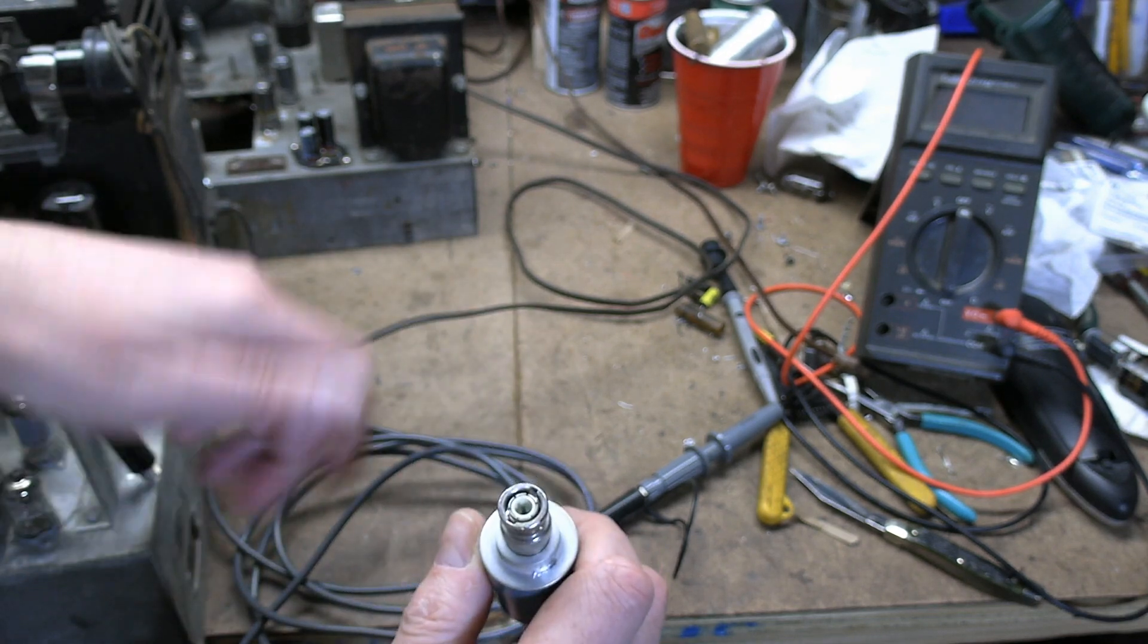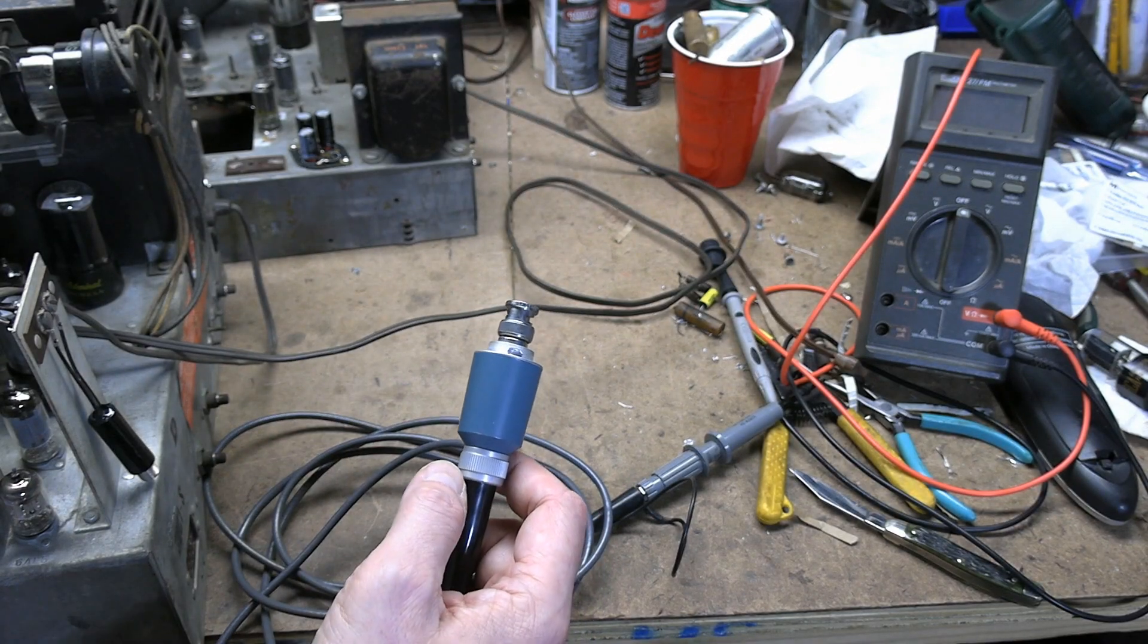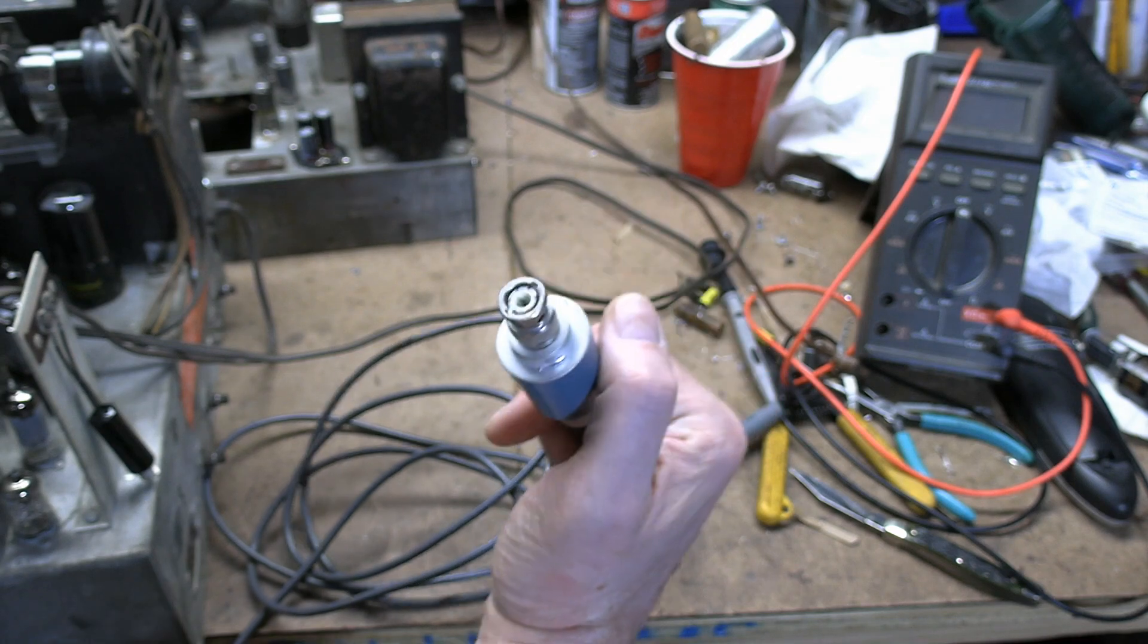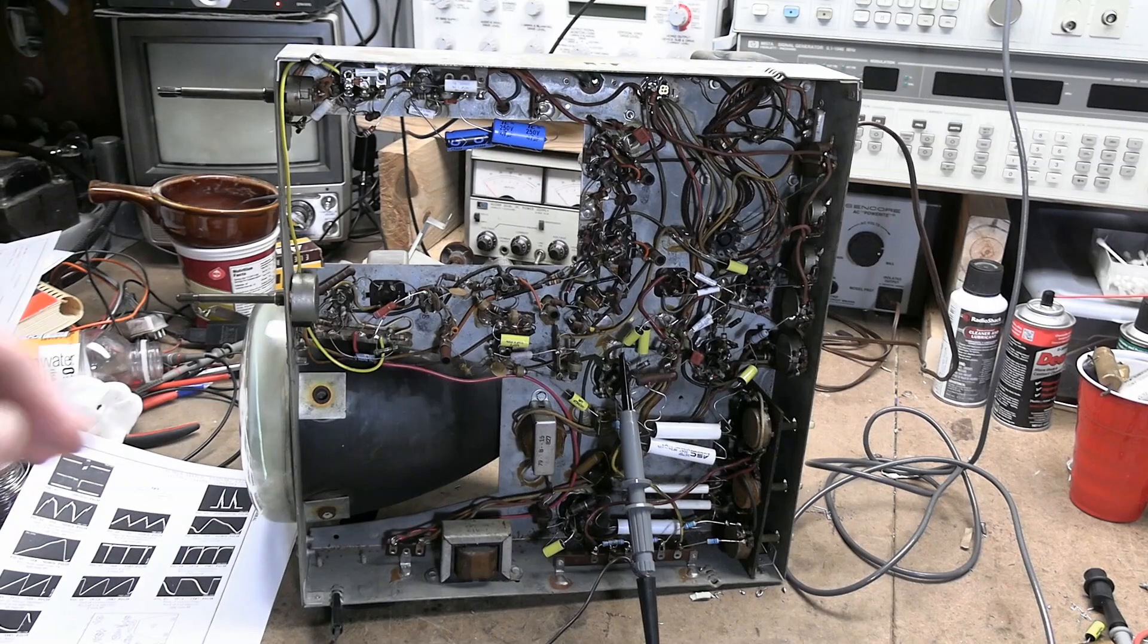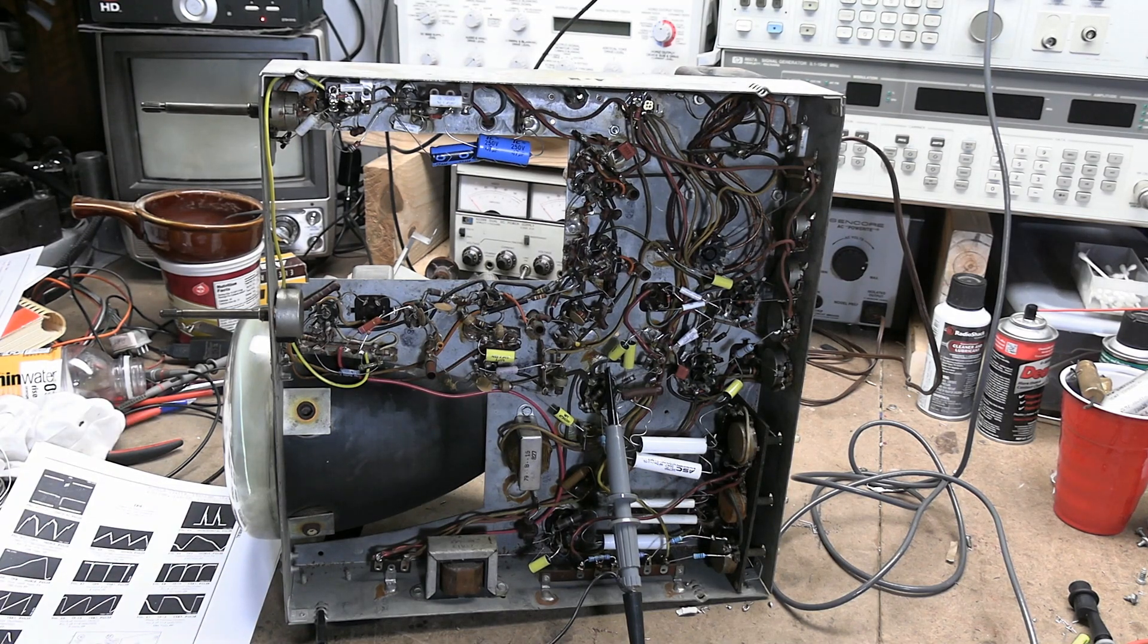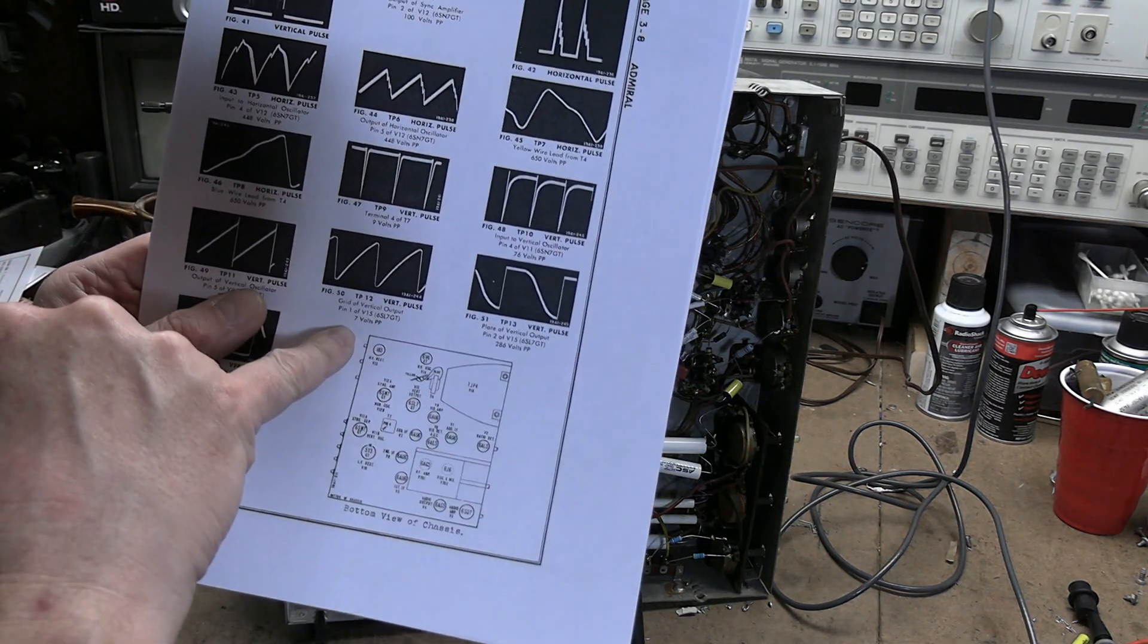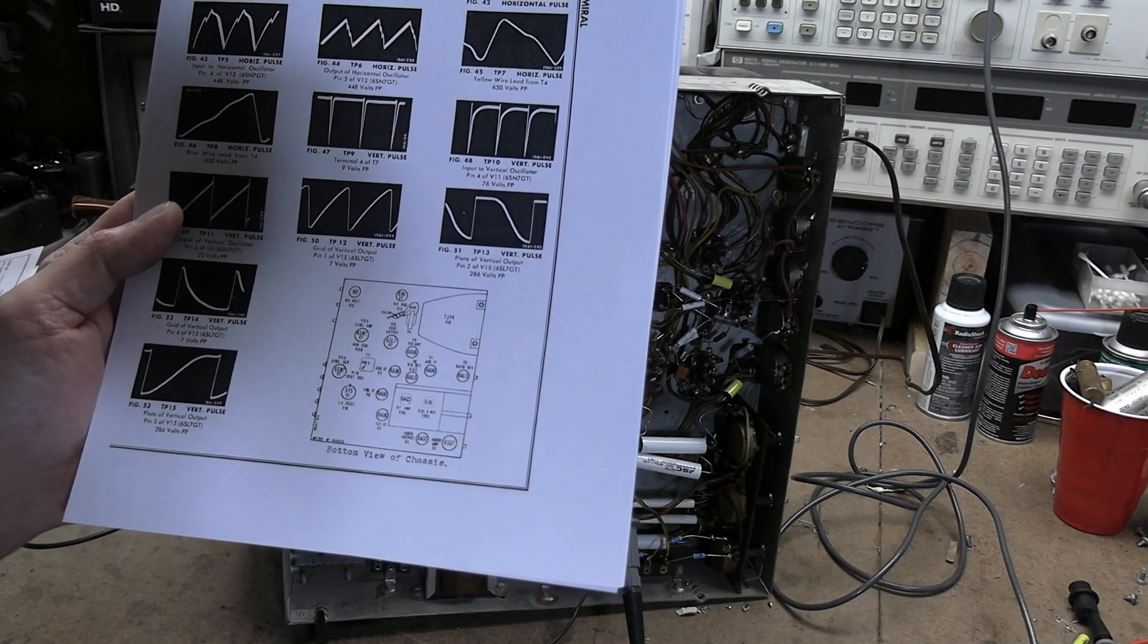Now, in order to try this out, you're going to sneak peek at an upcoming project, which is an electrostatic TV. This is nice because we can go to one of the output tubes, for example, the vertical output. On the grid we have 7 volts peak to peak. But the output is going to have about 300 volts peak to peak. So, right now I have it on the grid of the output tube.